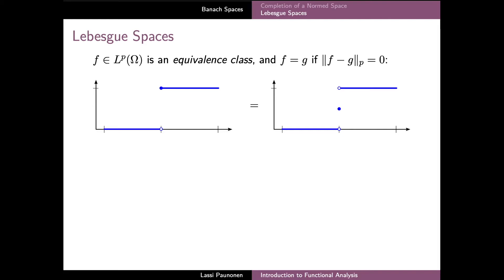But despite this technicality, it is very common to think of the space LP as a space of functions. In this interpretation, every one of these equivalence classes can be simply identified with a function belonging to this class. This function, in the theory of equivalence classes, is called a representative of the class.